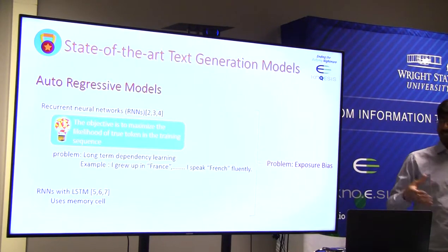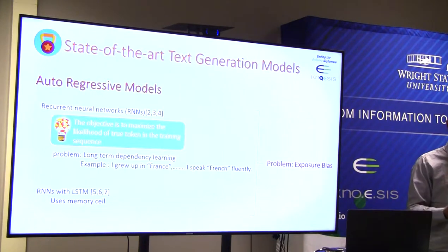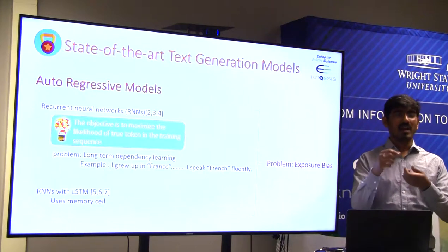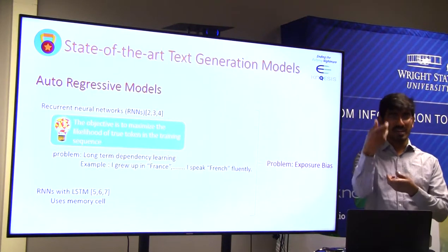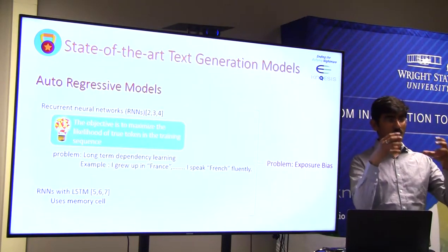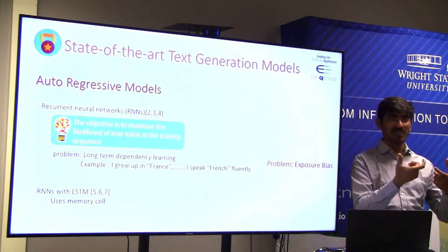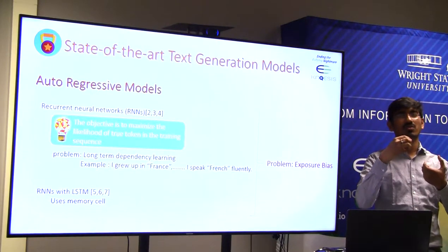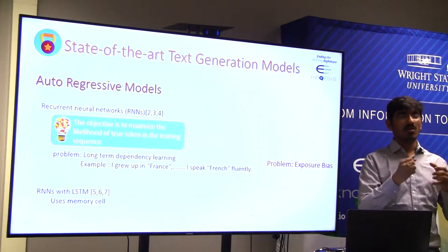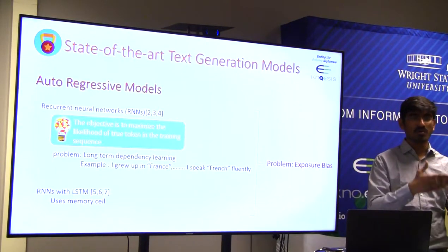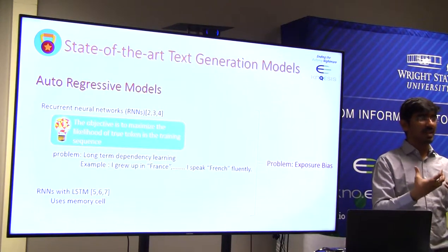The exposure bias problem occurs during generation: we generate one token, feed it to generate the next, and so on. The model generates sequences it has never seen before, so it does not know the most probable word to pick from the vocabulary. Errors accumulate one after another throughout the sequence generation process. This problem is called exposure bias.